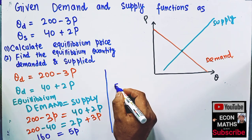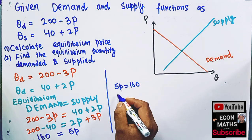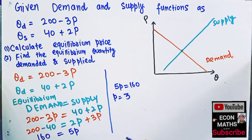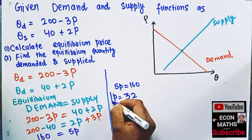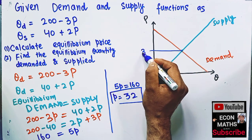So we have 5P is equal to 160, dividing both sides by 5. That means P will be equal to 5, 3s are 15, or 4, even 10, 5, 2s are 10. So equilibrium price will be equal to 32. So this is our equilibrium price.